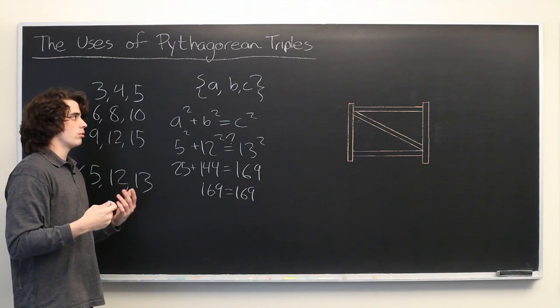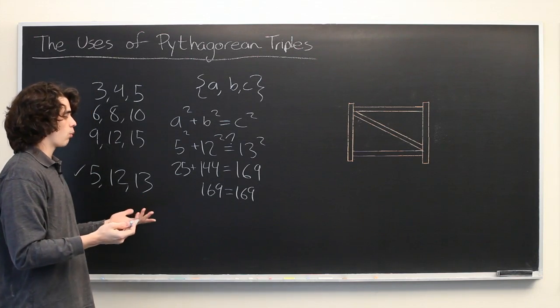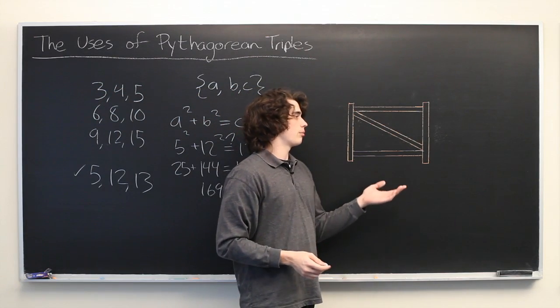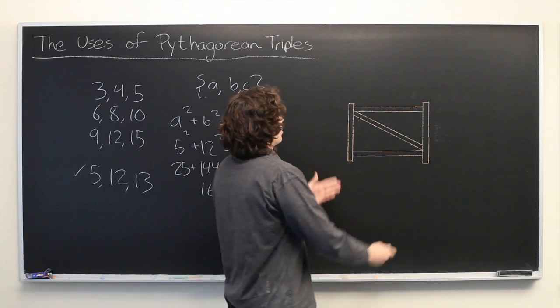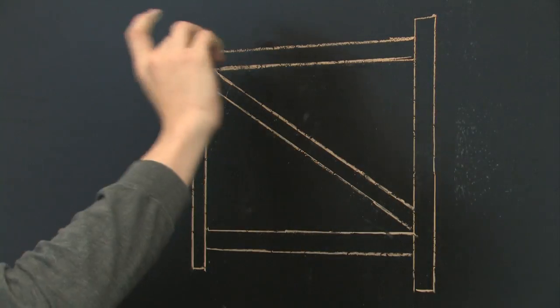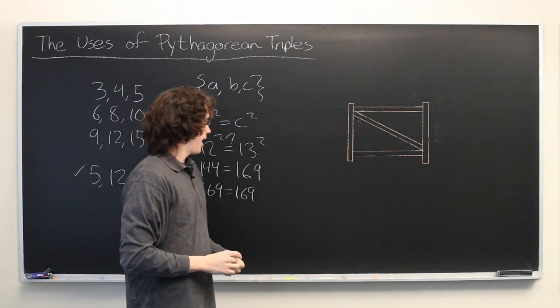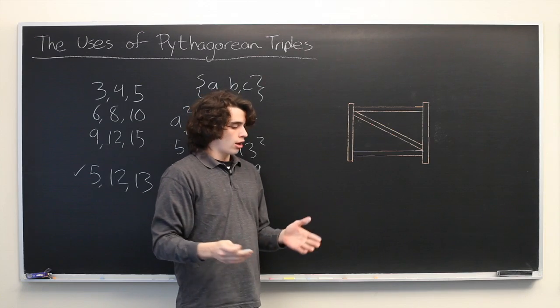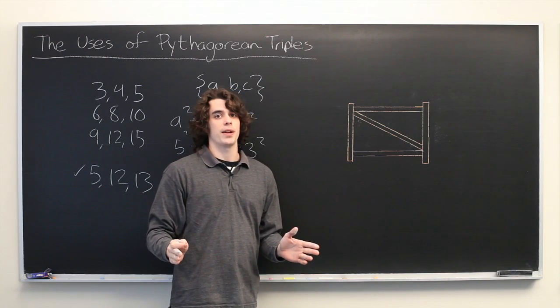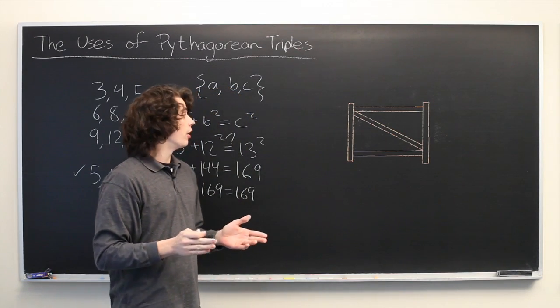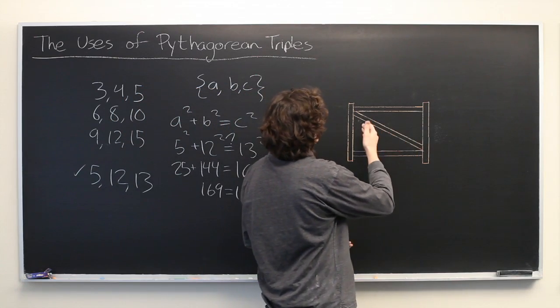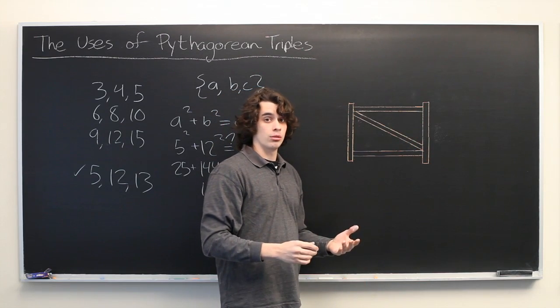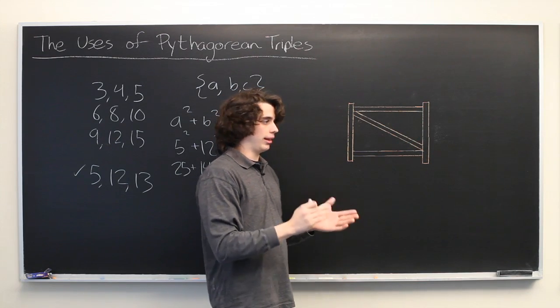But the question remains, what good is it to know about any of these? When would it ever come up in the real world? And here's an example. Let's say you're building a fence or designing a fence where there are going to be posts, horizontal beams, and then cross beams. And let's say that the type of lumber that you're using to build this fence comes in units of maximum length of 16 feet. And what you want to know is, can you design this fence in such a way that all three measurements will be integer, multiple of feet, but less than 16 feet?